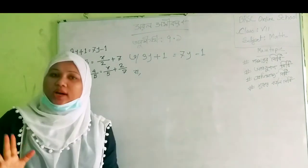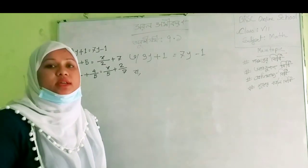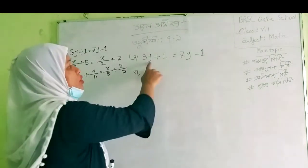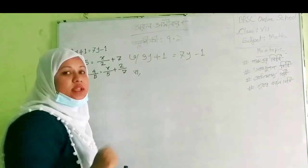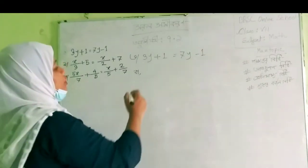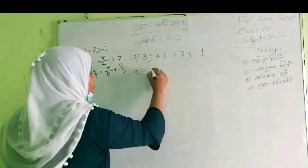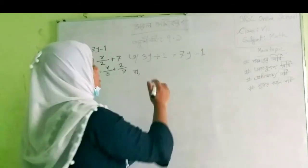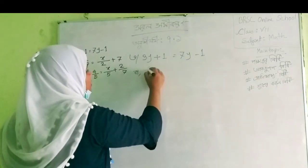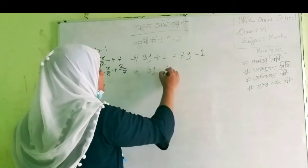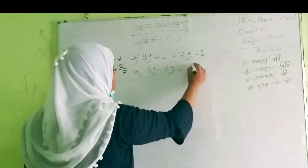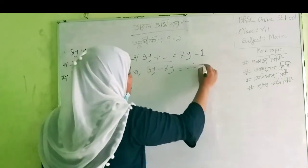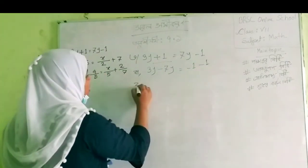x, y, p, q, y, which is x. So if you want to find the same way, what do you want to do? If you want to find the same way, the same way is x. So 3, y, minus, 7y, minus 1, 5, plus 5, minus 2.